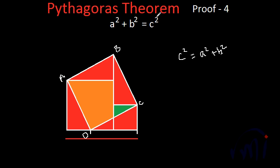The c squared has these parts from a squared and b squared, and the remaining parts of a squared and b squared which are in the form of these triangles are incorporated over here. This portion is incorporated over here. So from here, a squared plus b squared is actually equal to c squared. And this is also one way of proving the Pythagoras theorem.